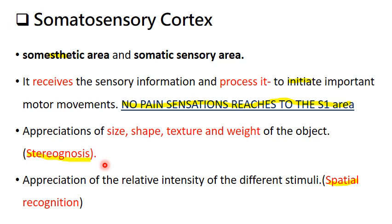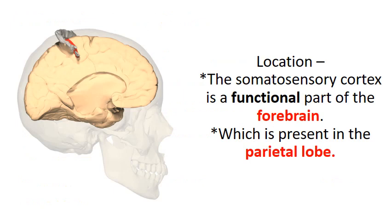The appreciation of the relative intensity of different stimuli is known as spatial recognition. The somatosensory cortex is situated in the forebrain, in the parietal lobe.